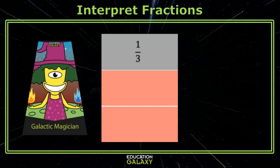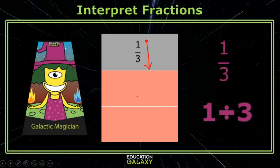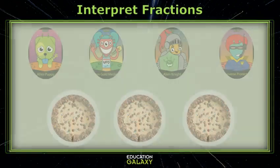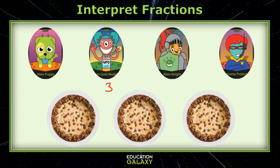Do you know how to write the fraction one-third using division? You read it from the top down, so this would be one divided by three. If I have three cookie cakes and I want to give an equal amount to four friends, it would be three divided by four. But I could write it as a fraction.